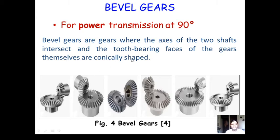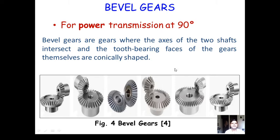The unique specialty of bevel gears is that they are able to transmit power at 90 degrees. These gears are used where the axes of two shafts intersect, and the tooth-bearing faces of the gears are conically shaped. The shape is conical in nature, making it a modification of the simple straight spur gear but forming a cone at the outer end. Bevel gears are used in many applications, mechanisms, and machines to transmit power at 90 degrees.